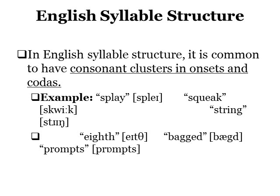In English syllable structure, consonant clusters in onsets and codas are quite common. For example, in the word 'string' there is a cluster of three consonants in onset position, and in the word 'prompt' there is a cluster of four consonants in coda position.